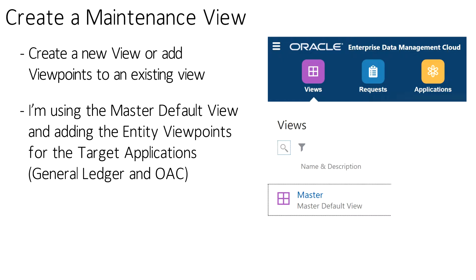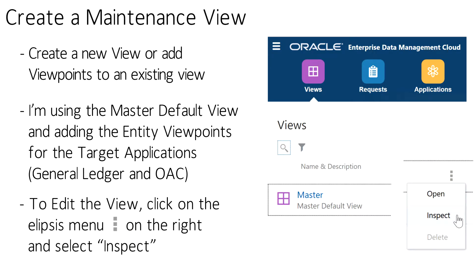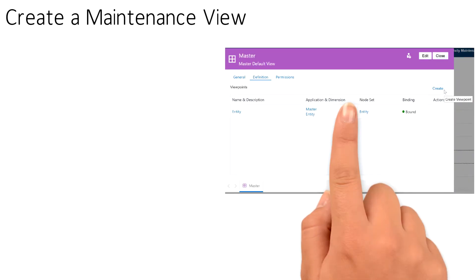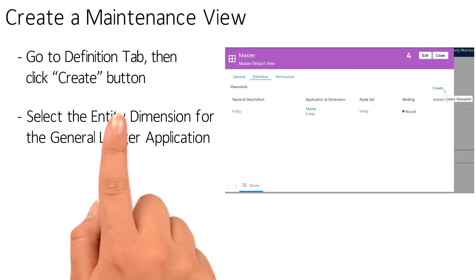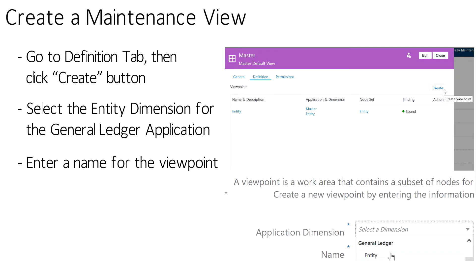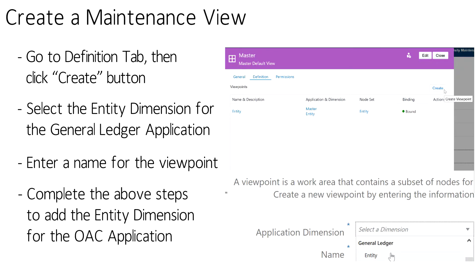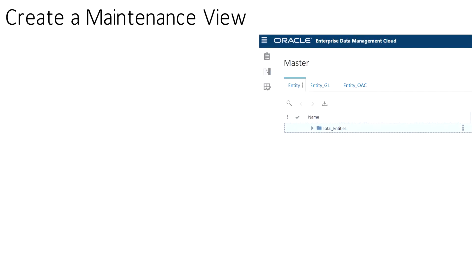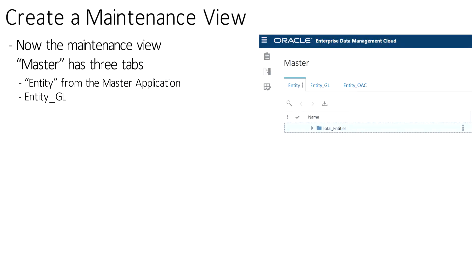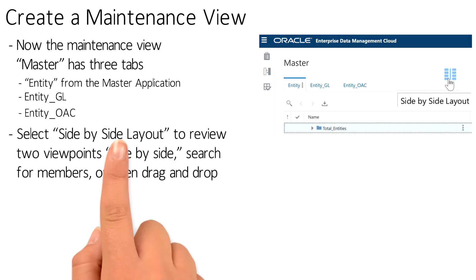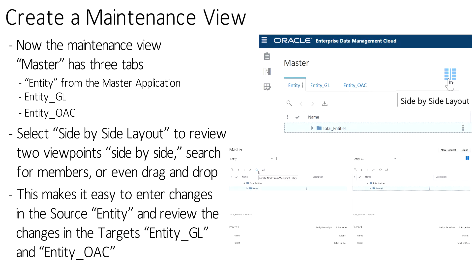To create the maintenance view, I want to add the entity viewpoints for both the General Ledger application and the OAC application. Click on the ellipsis and select Inspect. Select the Definitions tab and click on Create. A box will open with a list of available applications and dimensions — we'll select General Ledger entity and name the viewpoint. The same steps will need to be taken to add the OAC entity to the maintenance view. The maintenance view has three tabs, one for each viewpoint: Entity from the master application, Entity GL, and Entity OAC. You can also view the maintenance view in a side-by-side layout, which makes it nice to compare viewpoints or even drag and drop members from one to another.